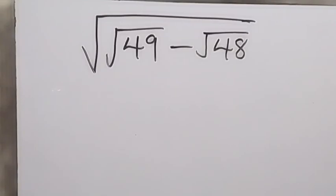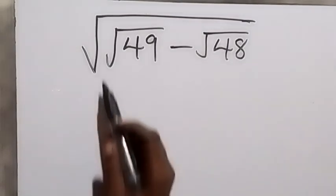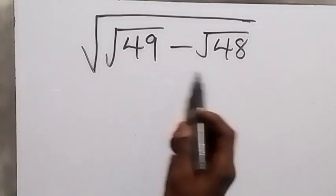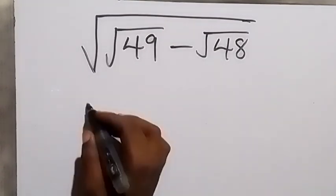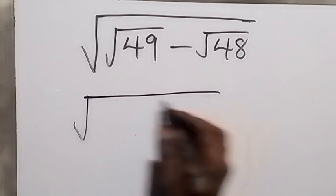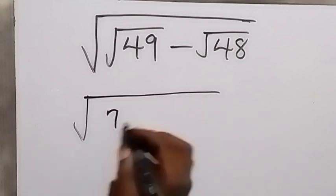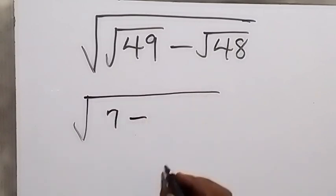Hello, you are welcome. How to solve this problem? We want to simplify the square root of √49 minus √48. From here, this can be written as √(7 - √48), and we can break it down.